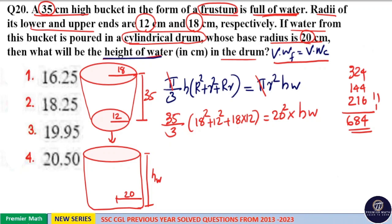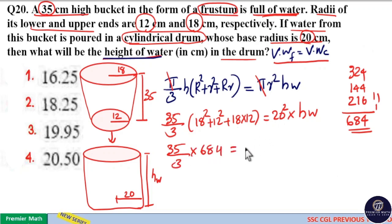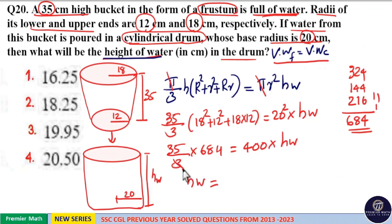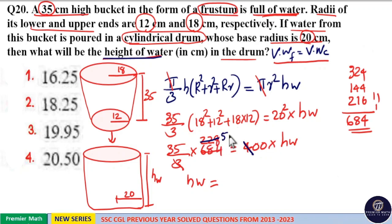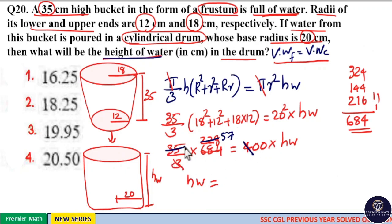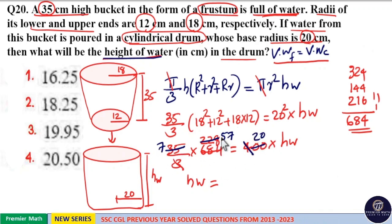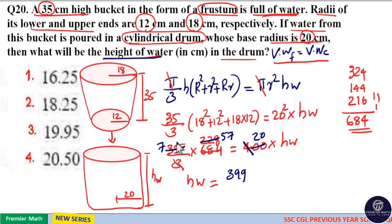So we have (35/3) × 684 = 400 × height of water. Simplifying: 3 divides into 684 giving 228, then 35 × 228 = 7980. Dividing by 400 gives height of water. After cancelling common factors — 5 goes 7 times into 35, and simplifying further — we get 57 × 7 = 399. So this side equals 399.